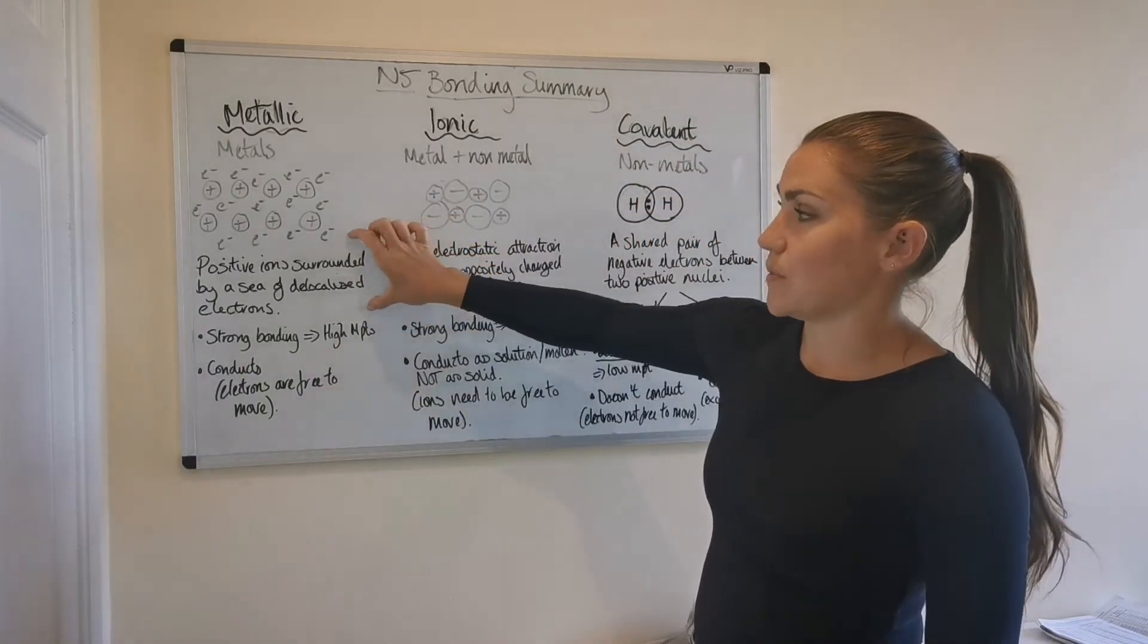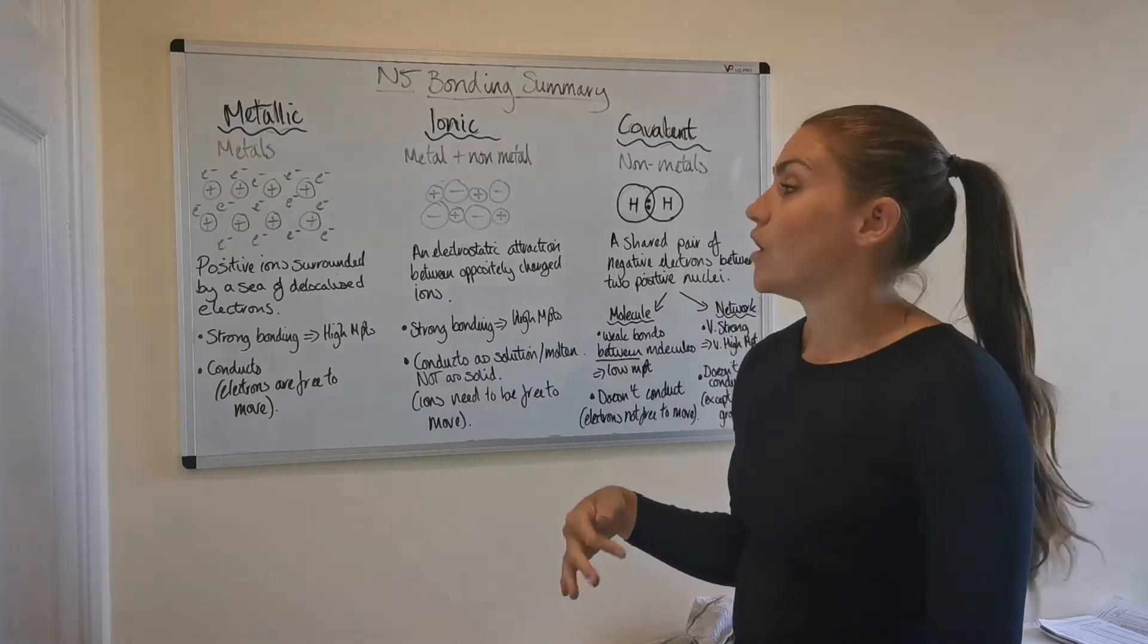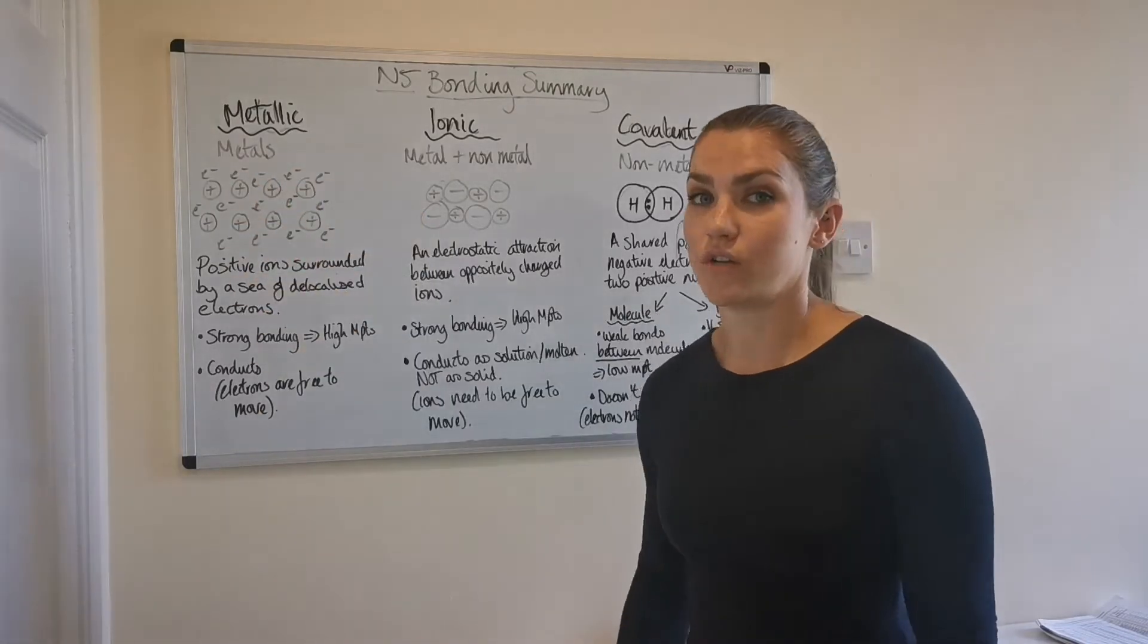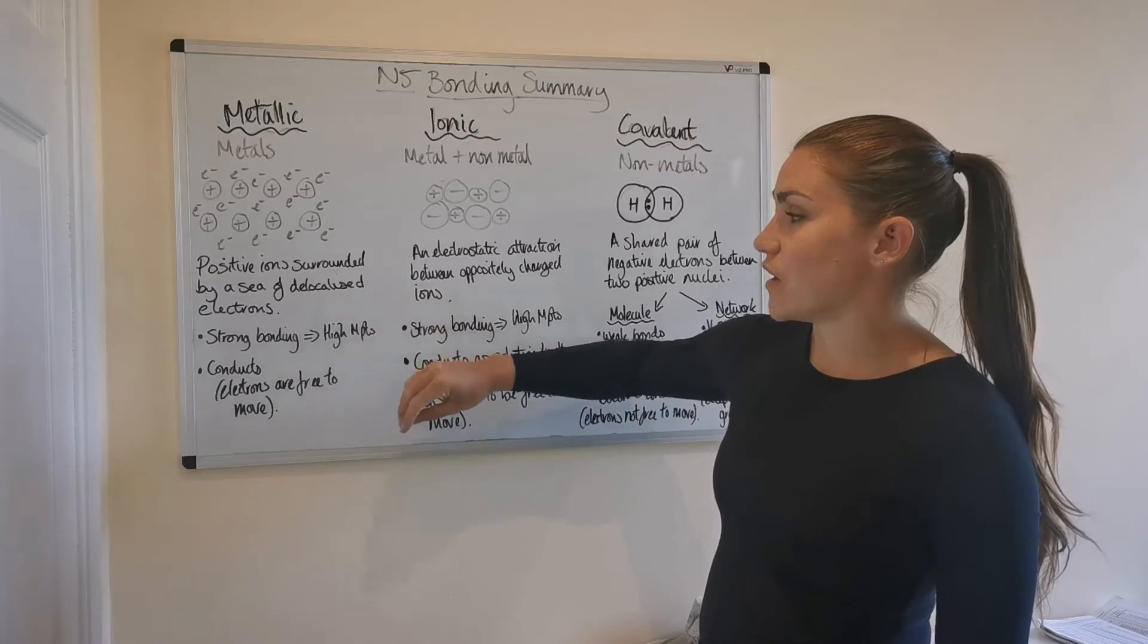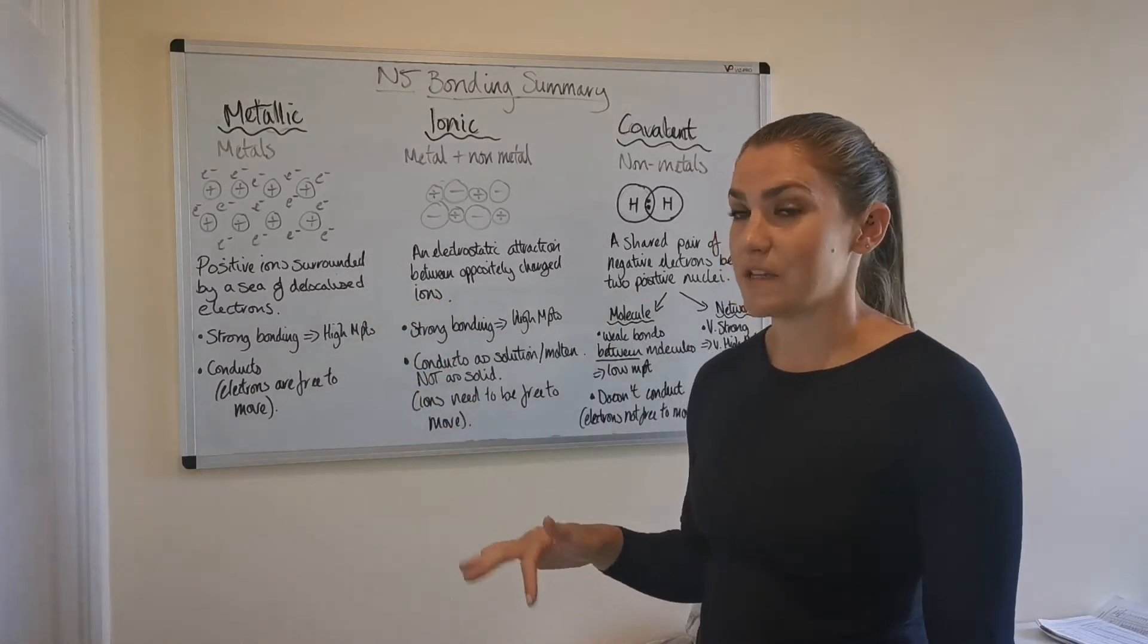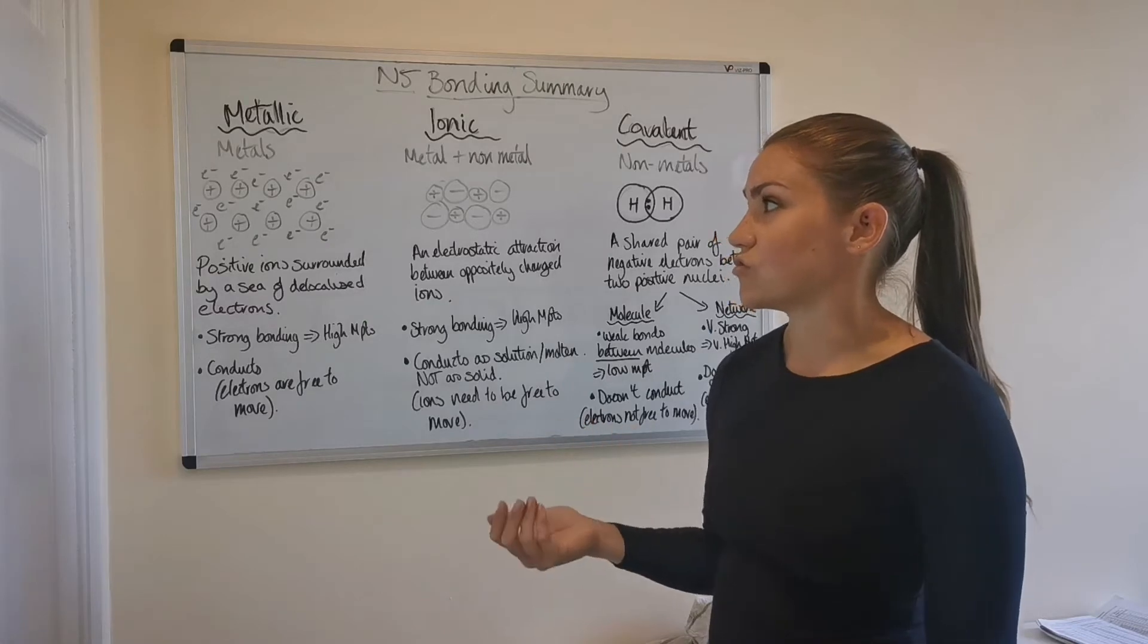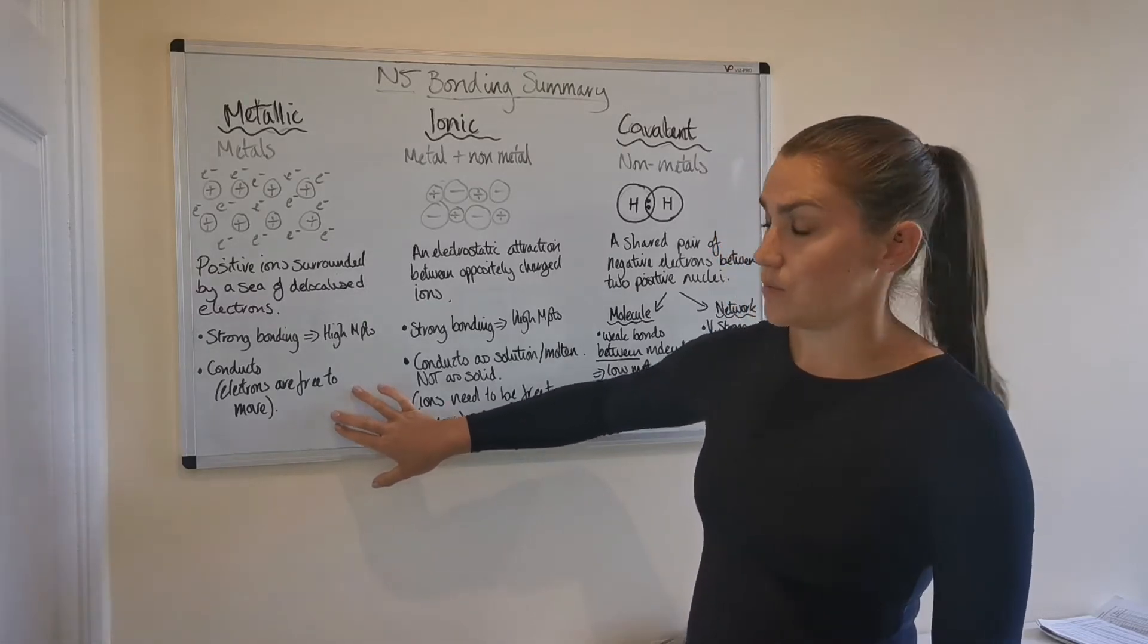So the description is given as positive ions surrounded by a sea or sometimes you'll see it referred to as a cloud of delocalized electrons. And all delocalized means is that the electrons can move around that structure very freely. As far as the bonding properties go, it's fairly strong bonding. So most metals do have fairly high melting points. There are some metals that have lower melting points, but in general, it's fairly strong bond. So you would need a lot of energy to break it. Hence the high melting and boiling points.